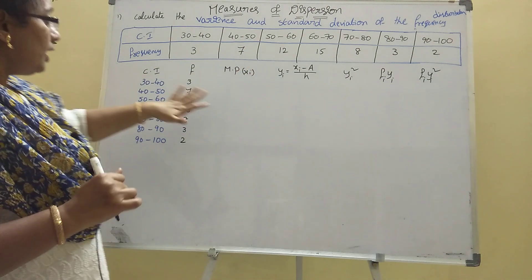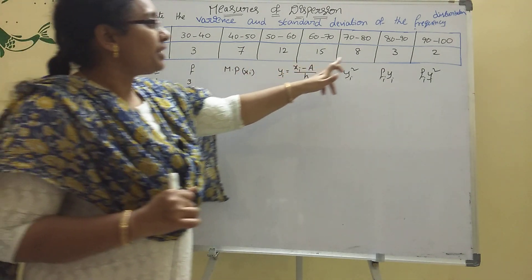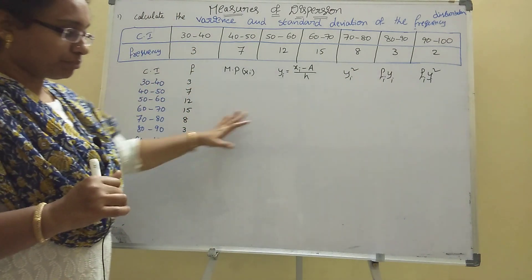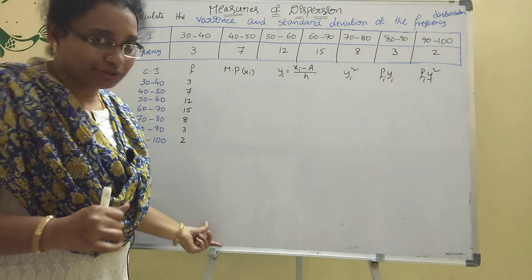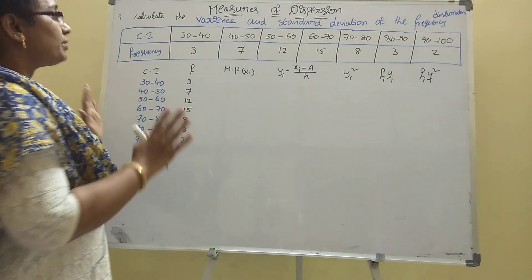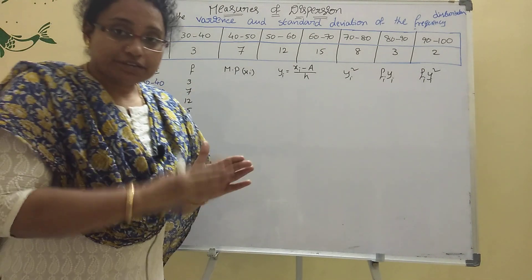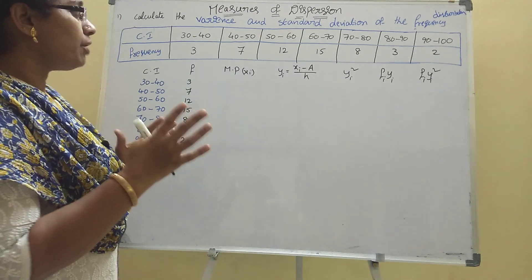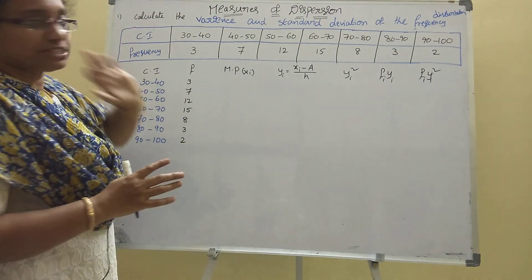The frequencies given are 3, 7, 12, 15, 8, 3. To find variance, we first need to find the mean. For the mean, we need the class interval and frequency set up in a table.